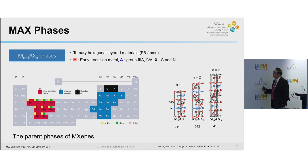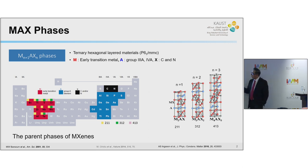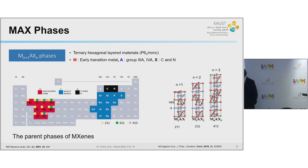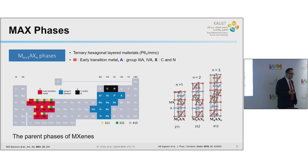Before we talk about MXenes, we should speak about MAX phases — phases that ceramics specialists have been studying for many years, well before MXenes were discovered. These phases are described by the general formula M-A-X, where M is an early transition metal, A is a group 3A element, and X is commonly carbon or nitrogen. Depending on the value of N, you end up with different MAX phases: for N=1 you get a 2-1-1 phase, for N=2 a 3-1-2, and so forth. These are the parent phases of MXenes, and before making MXenes you must first prepare MAX phases, which requires high-temperature synthesis.